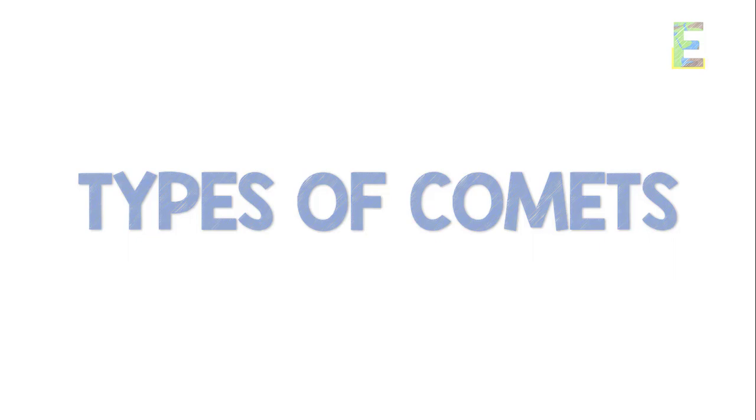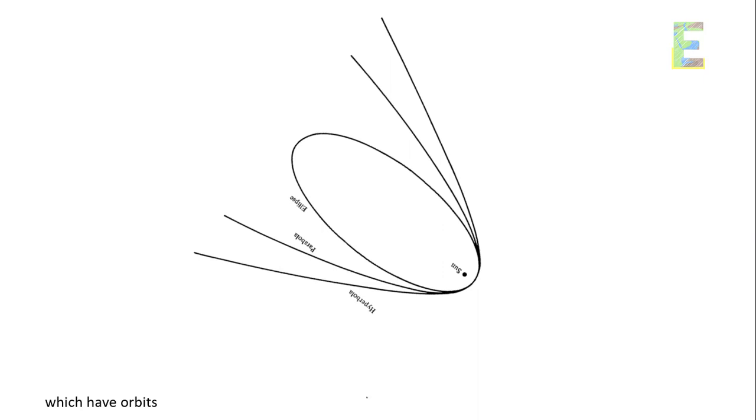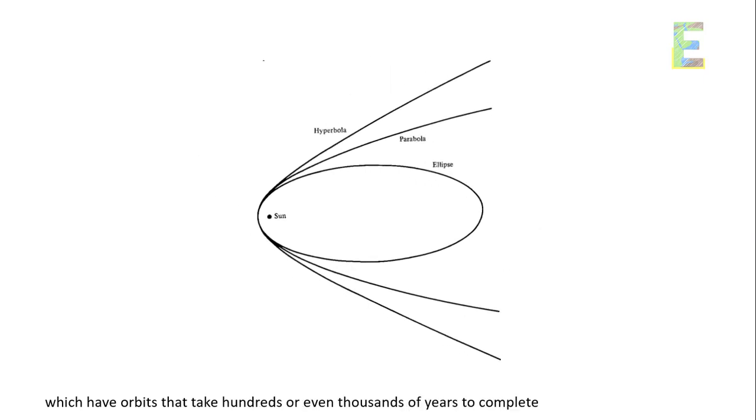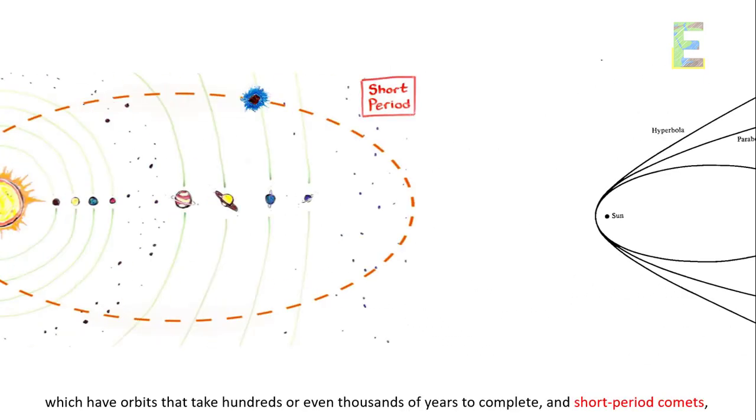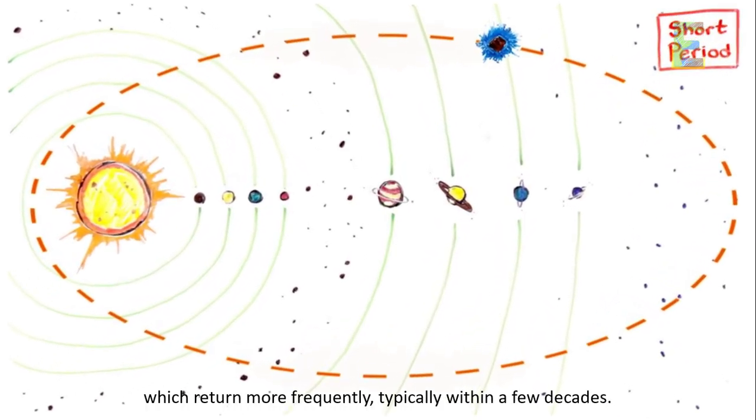Types of comets. Comets are categorized into two main types: long period comets, which have orbits that take hundreds or even thousands of years to complete, and short period comets, which return more frequently, typically within a few decades.